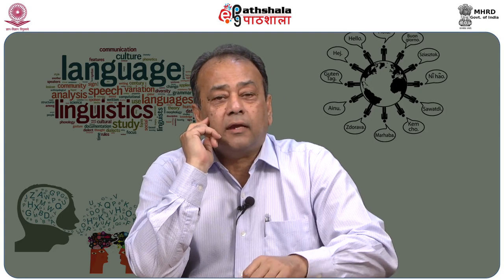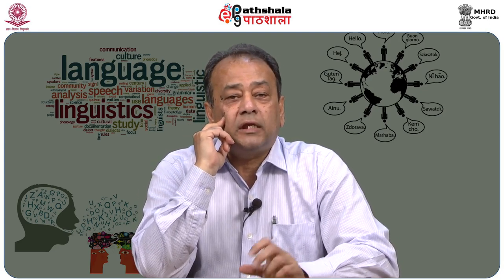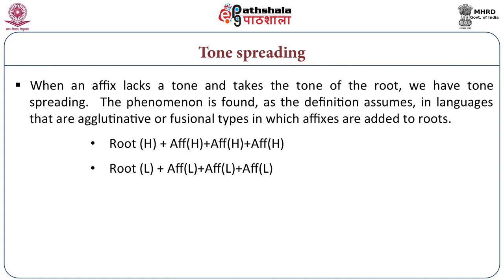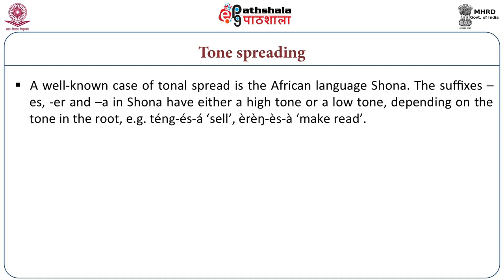Tone spreading: in languages that have tone mainly in the root, when a longer word is formed in agglutinative systems, the tone of the stem spreads onto the other affixes. If the root has H, then all the affixes also come to have H; if L (low tone), affixes take L. We have examples from Shona to illustrate the process — the stem 'teng' has a high tone and 'reng' has a low tone, and when longer words are formed from them, the affixes take the same tone as the stem.